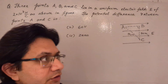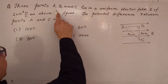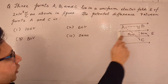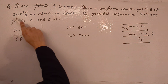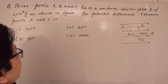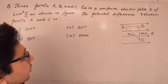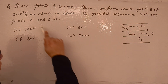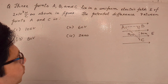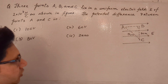Hello students. The question is: three points A, B and C lie in a uniform electric field E of 2×10³ Newton per coulomb, as shown in the figure. The potential difference between points A and C is: option 1 — 100 volts, option 2 — 60 volts, option 3 — 80 volts, and option 4 — 0.